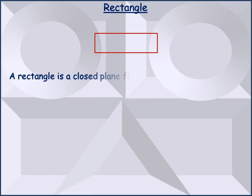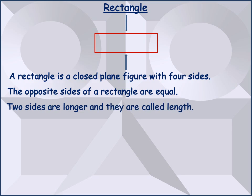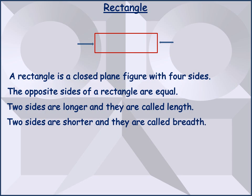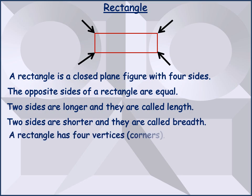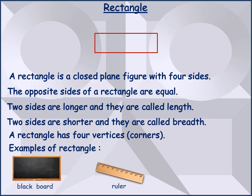A rectangle is also a closed plane figure with four sides, but unlike a square, the four sides of a rectangle are not equal. The opposite sides of a rectangle are equal. As you can see in the figure, two sides that are opposite to each other are longer and they are called length. The other two sides are shorter and they are called breadth. A rectangle also has four corners or vertices. Examples of a rectangle are a blackboard, ruler, and door.